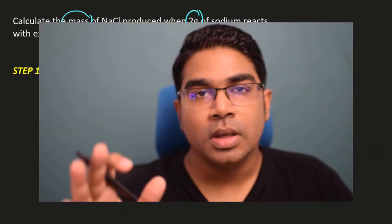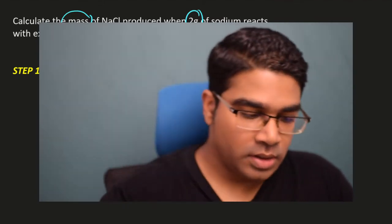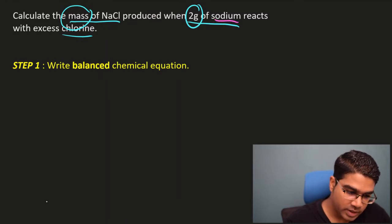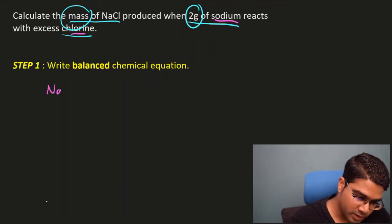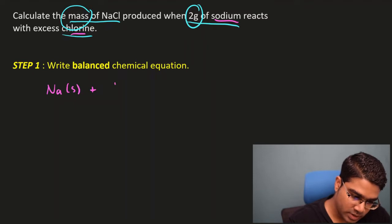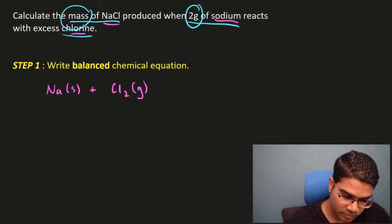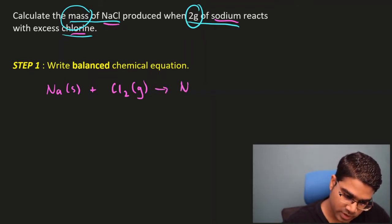This is a typical question. The first step in all chemistry calculations is we need a balanced chemical equation — this is very important. So let's write our chemical equation. We have sodium reacts with excess chlorine: sodium (Na solid) plus chlorine (Cl₂ gas), and the product is sodium chloride, written on the product side.